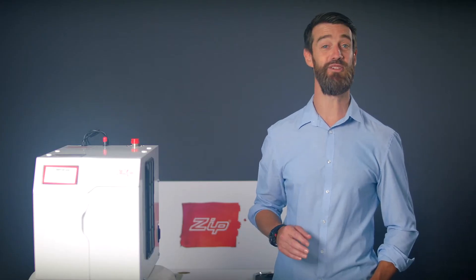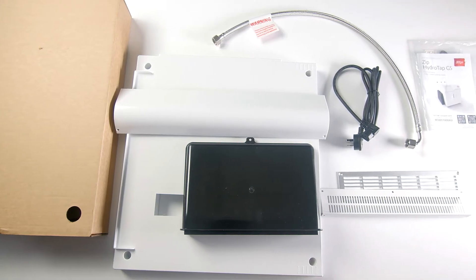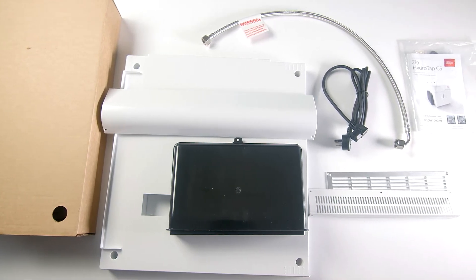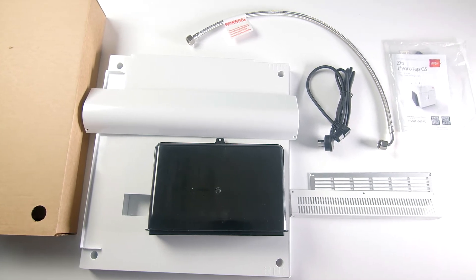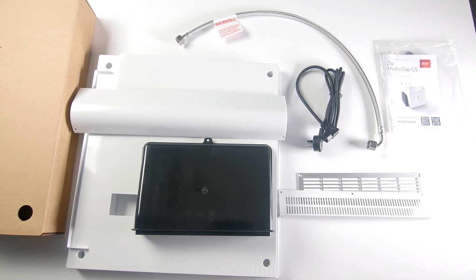Here's what you should receive in your new G5 HydraTap box: a command center, the vent tray, braided hose, IEC power lead, quick guide instructions which include a QR code link to the installation video you're now watching. You'll also receive the tap or faucet ordered with your HydraTap purchase.